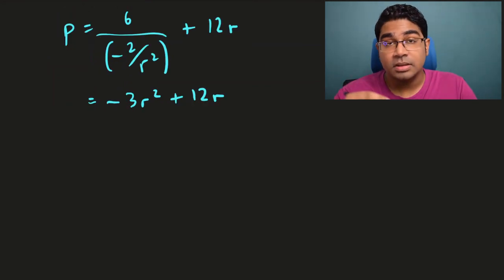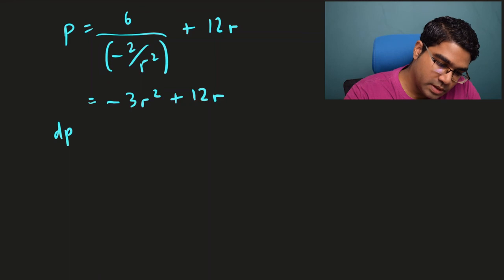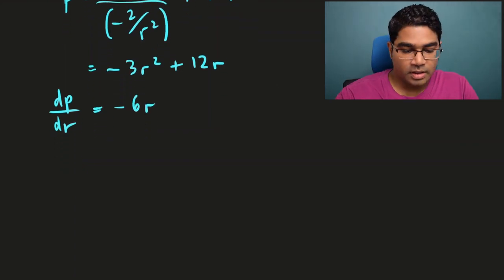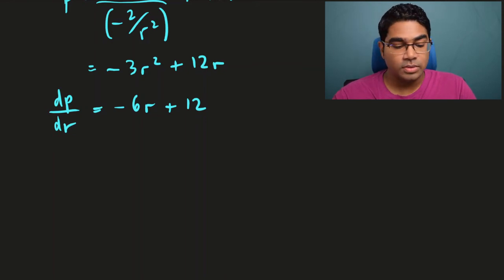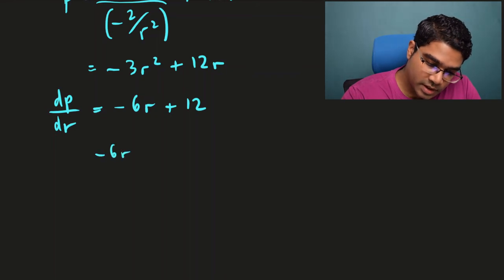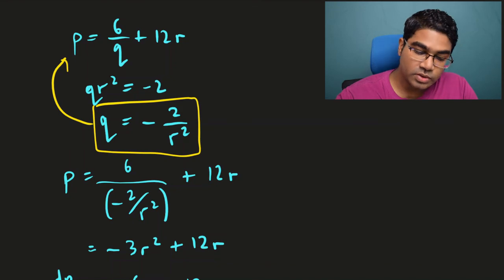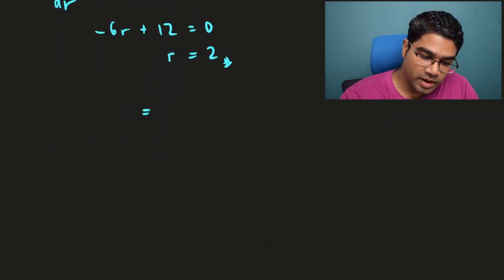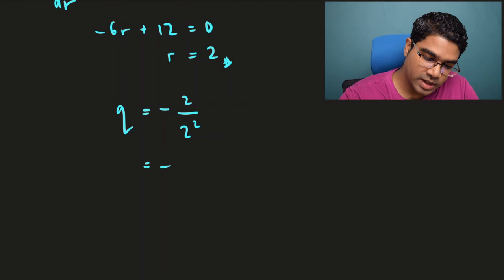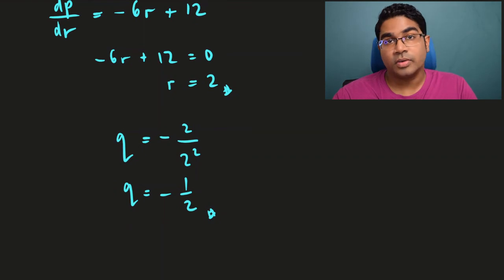Now we can find dp/dr, which equals negative 6r plus 12. Since it's a maximum value, the first derivative equals 0: negative 6r plus 12 equals 0, giving r equals 2. To find q, substitute r equals 2: q equals negative 2 over 2² equals negative 2 over 4, so q equals negative one half. These are the values of q and r when p is maximum.